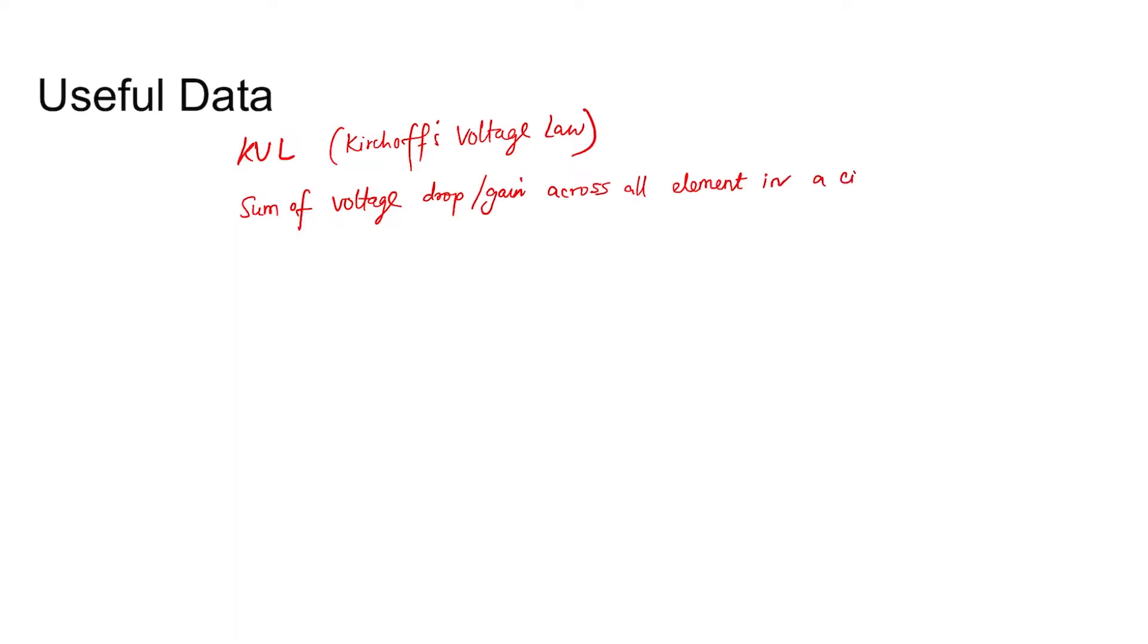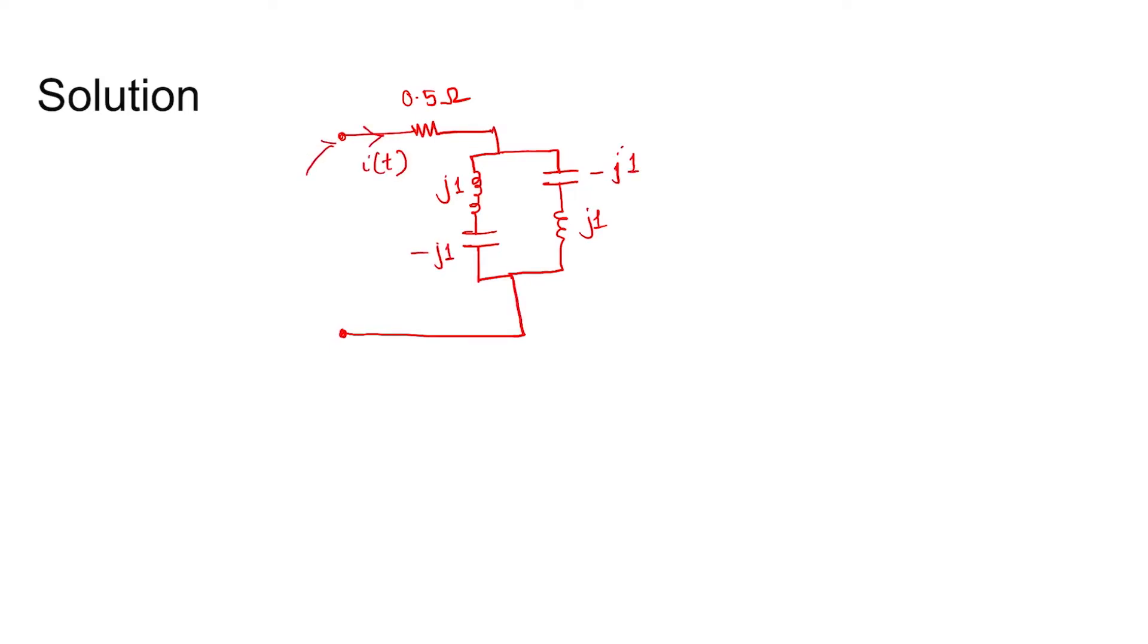Coming to the solution, the circuit given is like this: 0.5 ohm, so this is j1 and this is j1, this is minus j1. This is the current flowing i(t), and the voltage across these two nodes, the supply voltage is 100 sin(ωt).